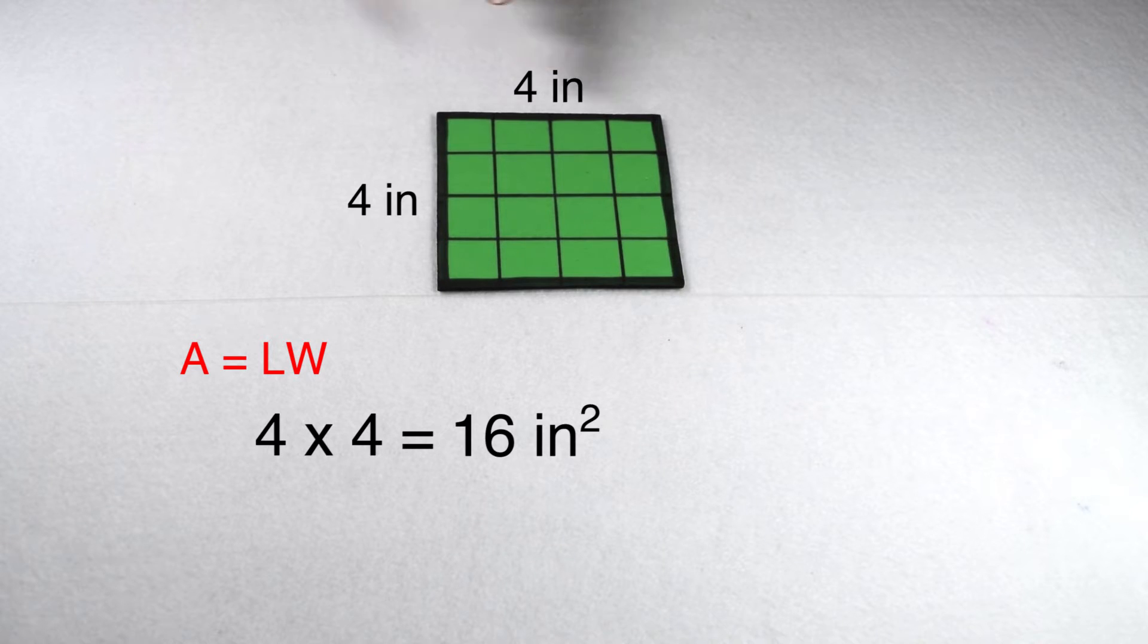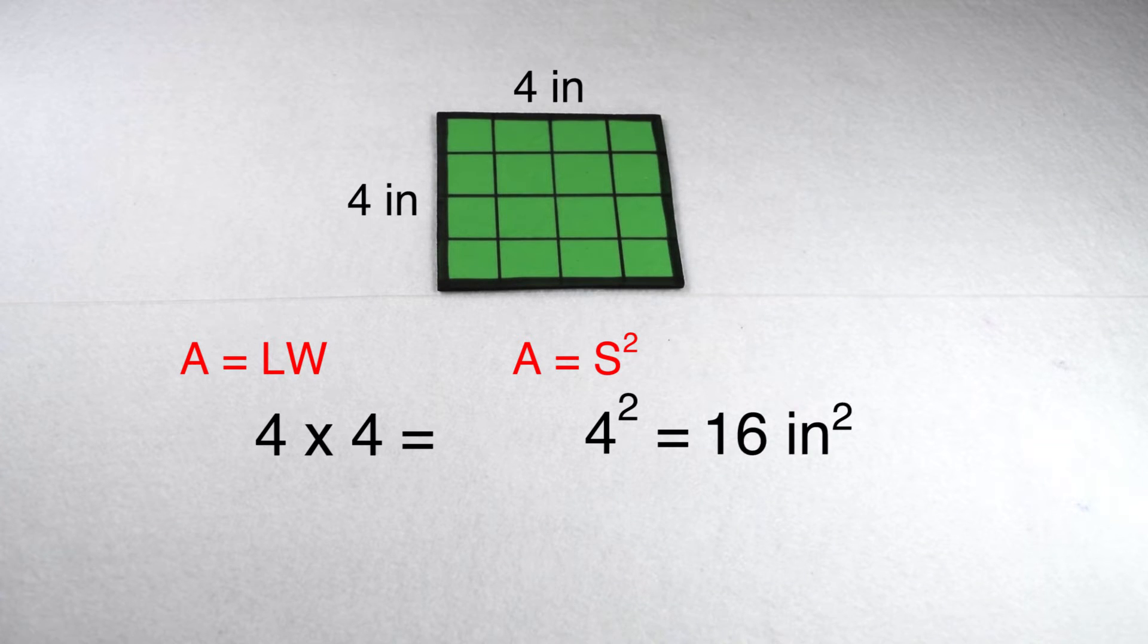However, we're multiplying 4 times 4. We're multiplying the value by itself. We know this is the same as raising the 4 to the second power using the exponent of 2. 4 squared would also tell us to do 4 by 4, so we could still use the equation area equals side squared to find the area of a square.